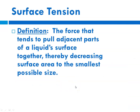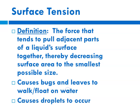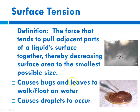Surface tension is, by definition, a force that tends to pull adjacent parts of a liquid's surface together, thereby decreasing the surface area to the smallest possible size. It is a function of intermolecular forces of attraction. It's what causes bugs to walk on water and leaves to float on water, and it also is what causes droplets to form. Here is a little water walker, and here is a droplet.